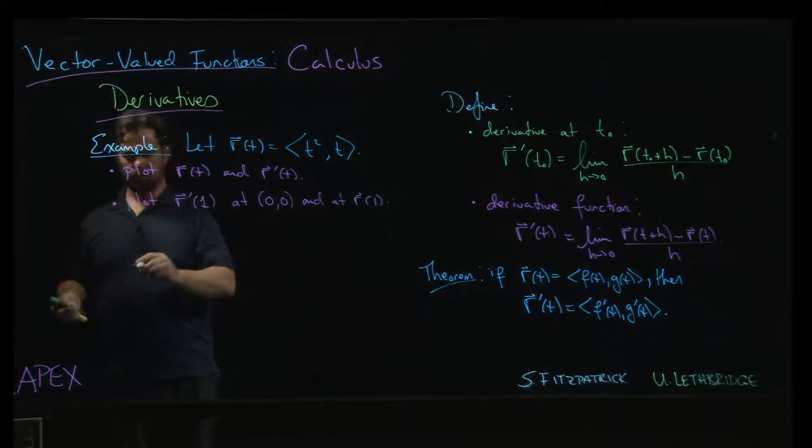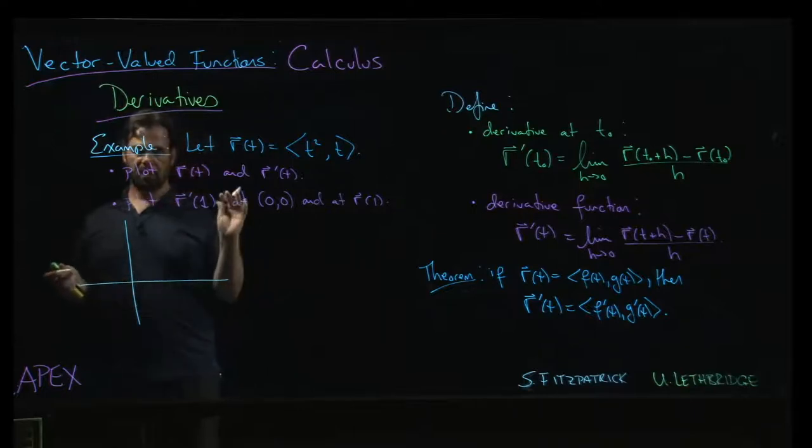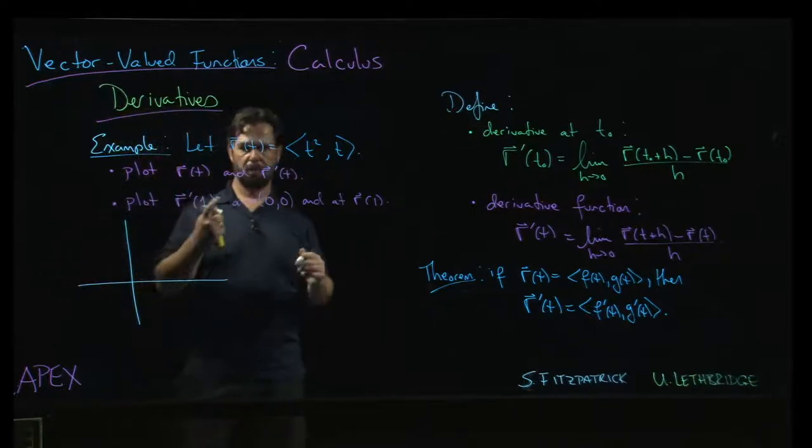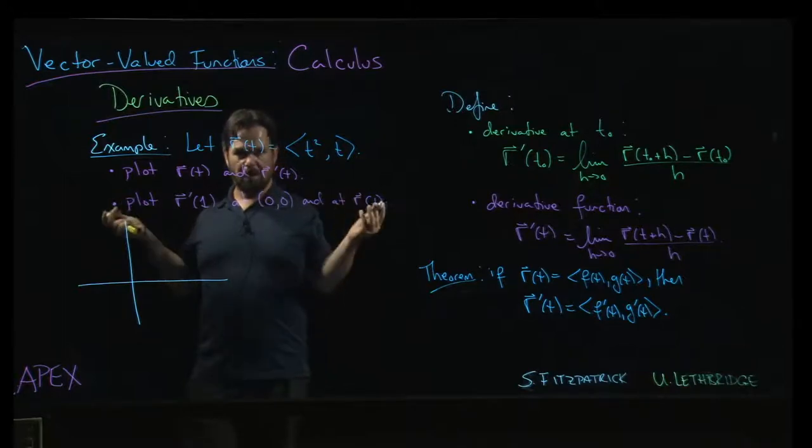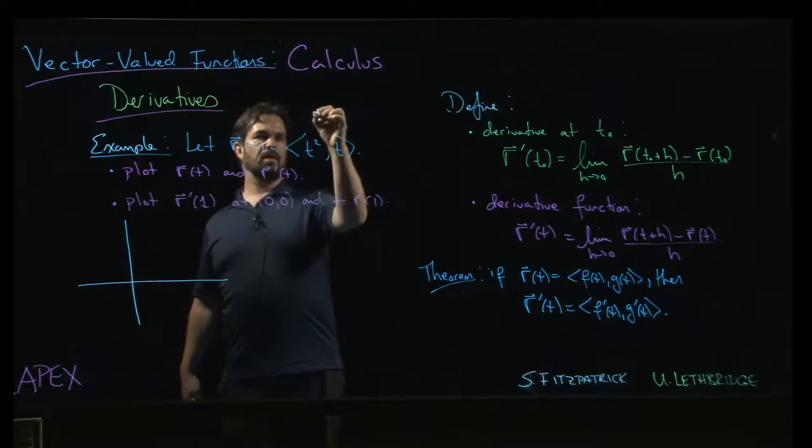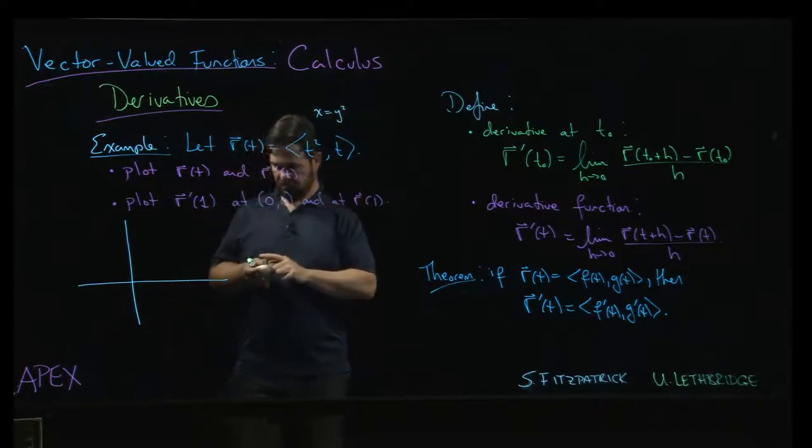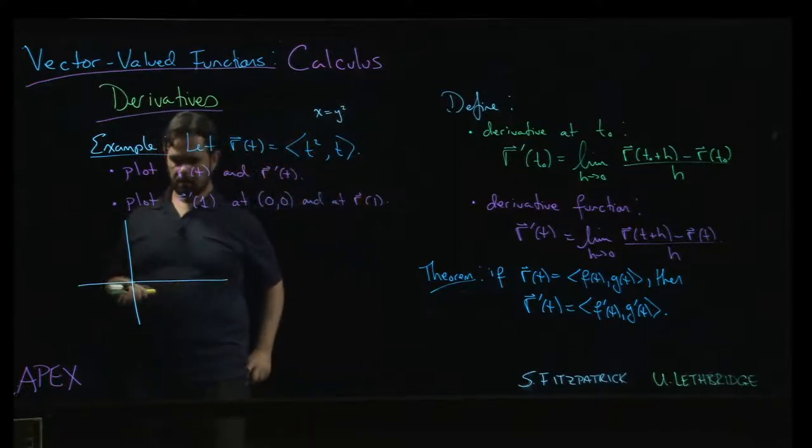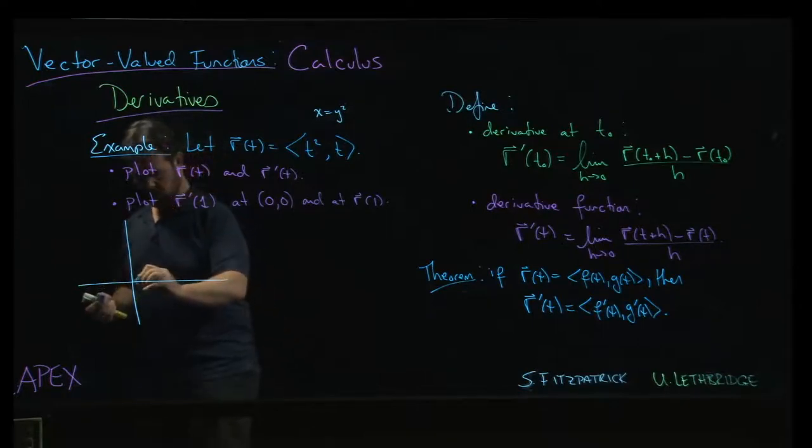First up we're asked to simply plot, you know, draw the graph of the vector-valued function, which again is just plotting a parametric curve. And you can see the relationship here is that x is equal to y squared, so that is a parabola. Let's draw in blue.